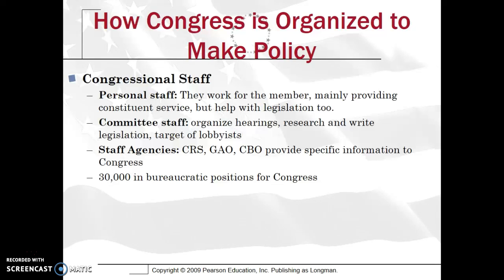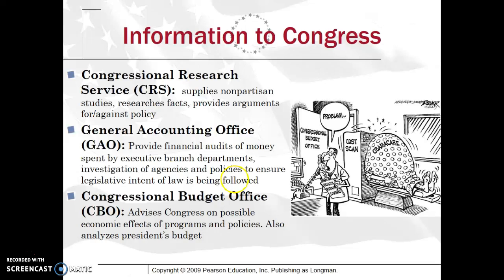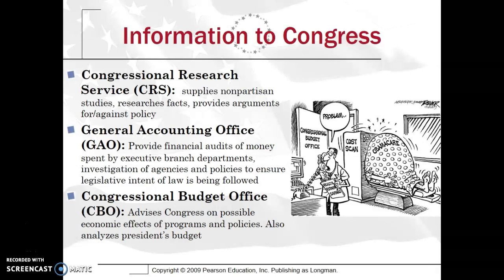There are about 30,000 bureaucratic positions for Congress today, and as many as 3,000 people can be involved in the process of just one particular bill. The CRS provides nonpartisan studies, research facts, and arguments for or against policy for Congress. The GAO — the General Accounting Office — provides financial audits of money spent by executive branch departments, investigating agencies to ensure legislative intent of the law is followed. The CBO advises Congress on possible economic effects of programs and policies, and also analyzes the president's budget.